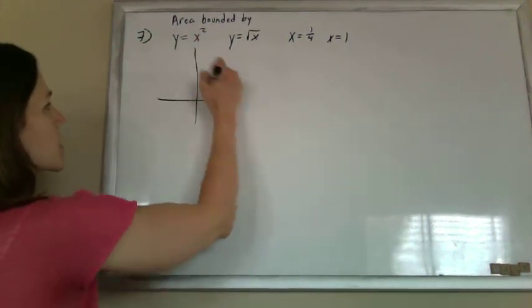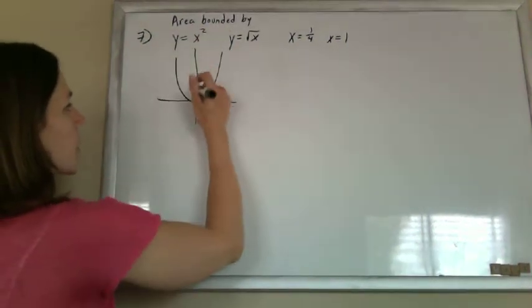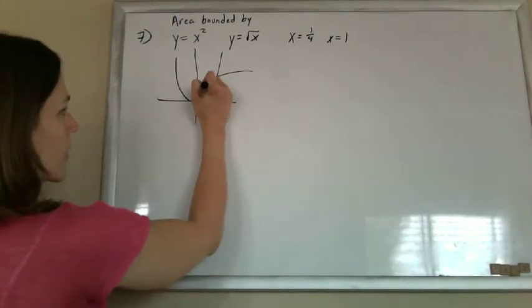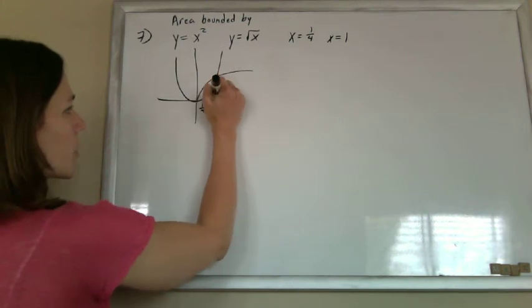So when we graph these guys, we've got y equals x squared, and we've got y is the square root of x, and we're graphing it between one-fourth and one.